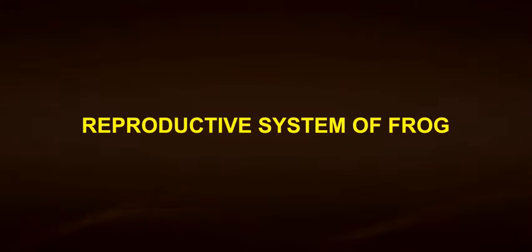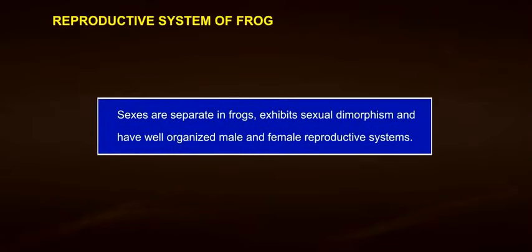Reproductive system of frog. Sexes are separate in frogs; they exhibit sexual dimorphism and have well-organized male and female reproductive systems.